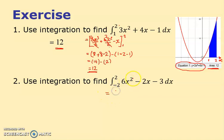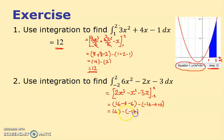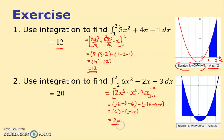The second practice question: integrating gives 6x cubed over 3 minus 2x squared over 2 minus 3x, which simplifies to 2x cubed minus x squared minus 3x. Substituting 2: 2 cubed is 8, times 2 is 16, minus 4, minus 6 — first bracket is 6. Substituting minus 2: minus 8 times 2 is minus 16, minus 4 (because minus x squared with minus 2), plus 6 — second bracket is minus 14. Then 6 minus (minus 14) gives 20.